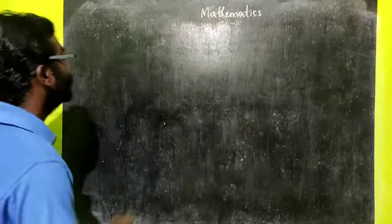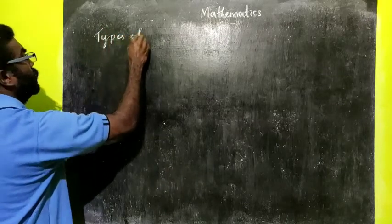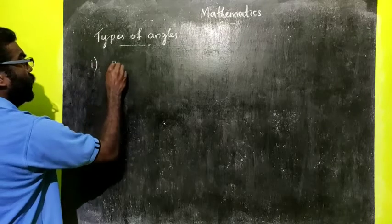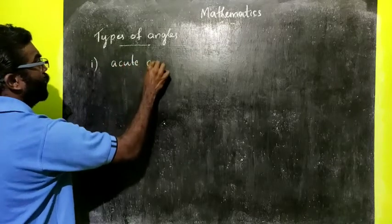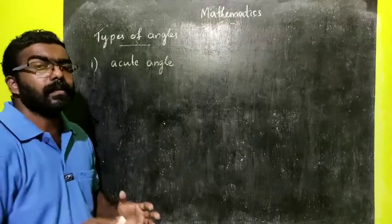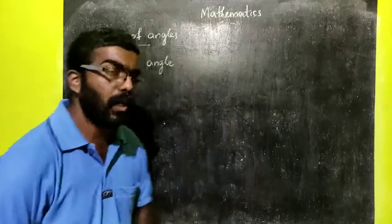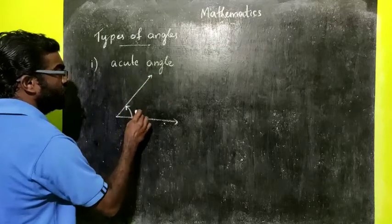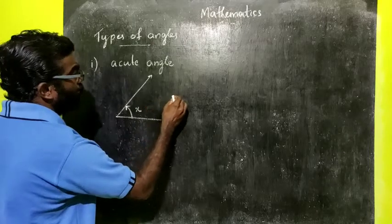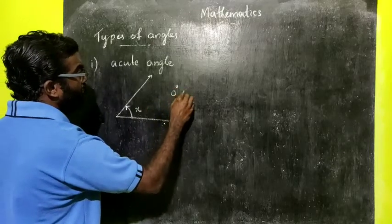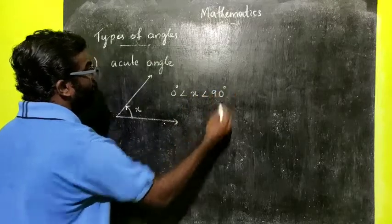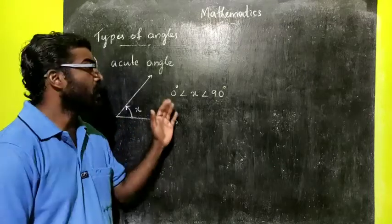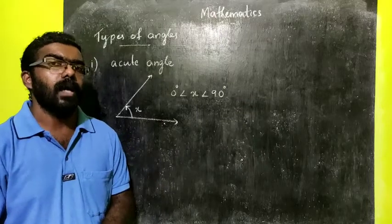Now we shall discuss types of angles. There are different types of angles. First one is acute angle. If the angle measure is less than 90 degrees, then the angle is called an acute angle. That is, if the measure is x, then x lies between 0 degrees and 90 degrees: 0 degrees less than x, less than 90 degrees. So this type of angle is called an acute angle.